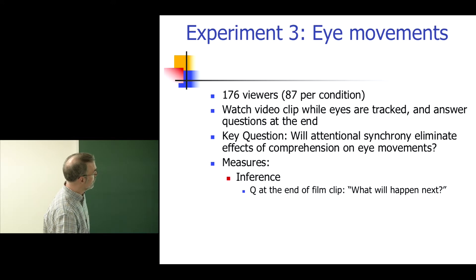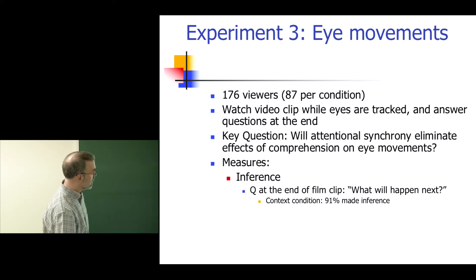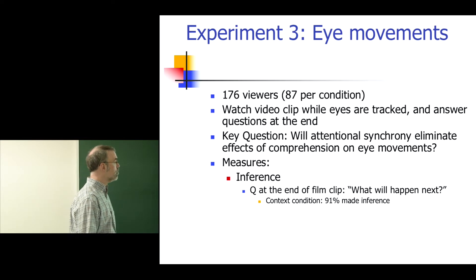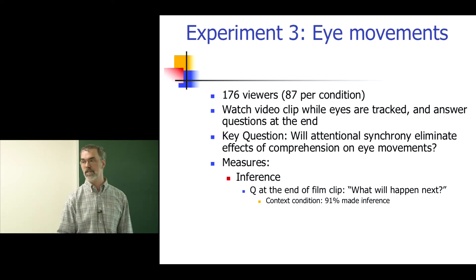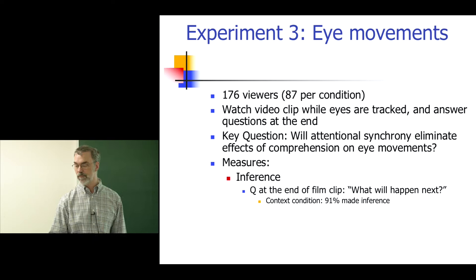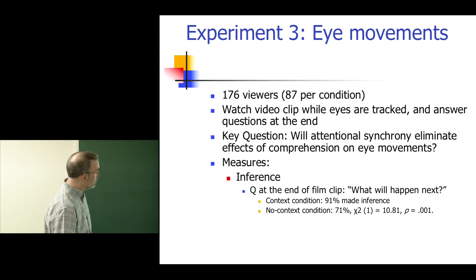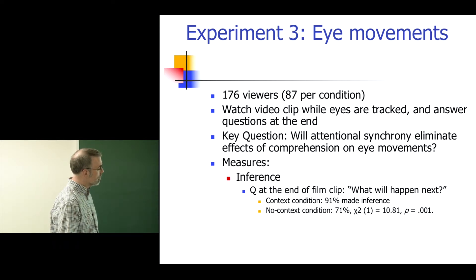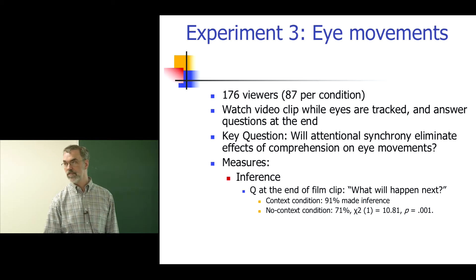When we asked them what will happen next, in the context condition, 91% of the people said the guy's going to fall in the circus tent — they made the inference. But in the no-context condition, only 71% did. So that's a pretty big difference.